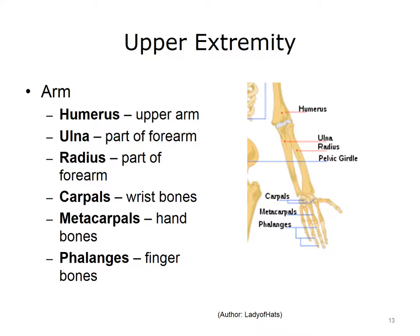We commonly refer to the arm as our upper extremity. The arm consists of a variety of bones. The humerus is the long bone in the upper arm. The ulna is one of two bones in the forearm and lies on the little finger side. The radius is the other bone in the forearm and lies on the thumb side. Carpals are our wrist bones, metacarpals are our hand bones, and phalanges are the bones of the fingers.